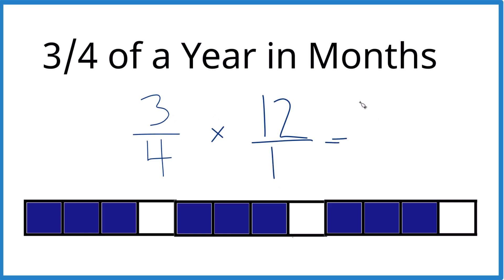Three times 12, that's 36. And then four times one, that's four. If you divide 36 by four, you get nine, and that's what we found down here and earlier. That's how you find three-fourths of a year in months.